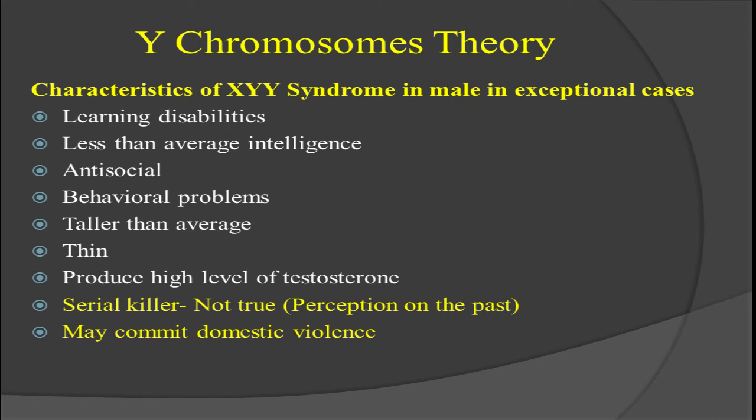They may have less than average intelligence — their intelligence may not be strong enough and they could be below average. They might also be antisocial and involved in antisocial activities, with behavioral problems in dealing with people. According to different surveys, they tend to be taller and thinner than average — giant in stature. They produce high levels of testosterone, which is the male sex hormone that helps in the development of male reproductive tissues as well as secondary sexual characteristics such as muscle enhancement, body hair, and deeper voice.